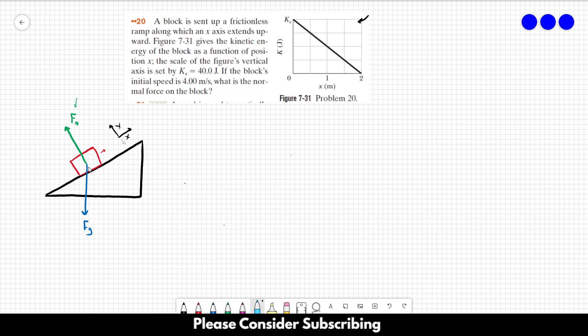So Fg we have one component that points in this direction over here. Let's call it Fy. And we also have one component that points here, which is Fx. Let's call it Fx. You could choose any letter that you want.